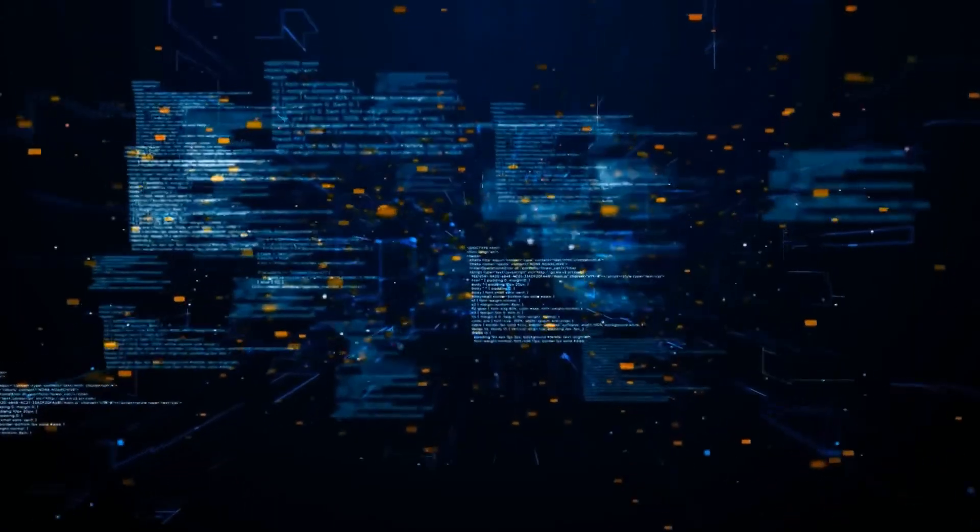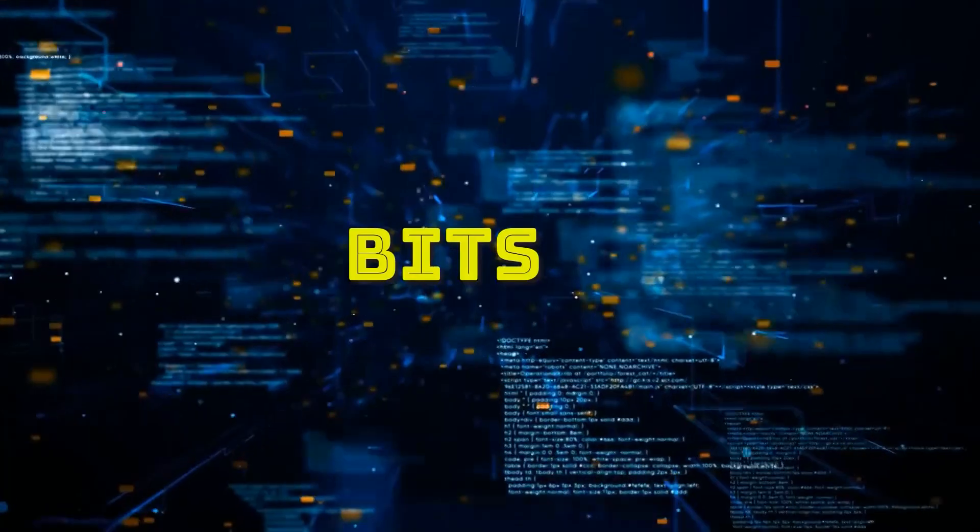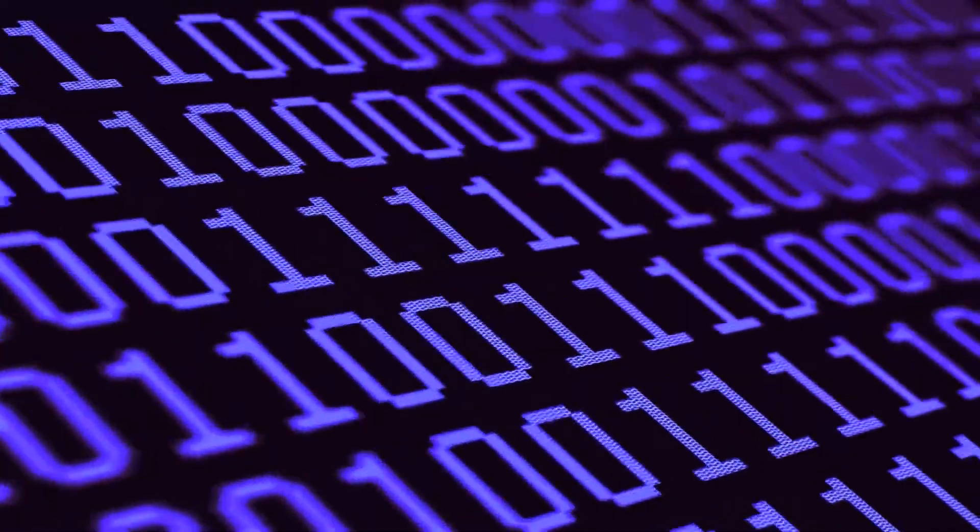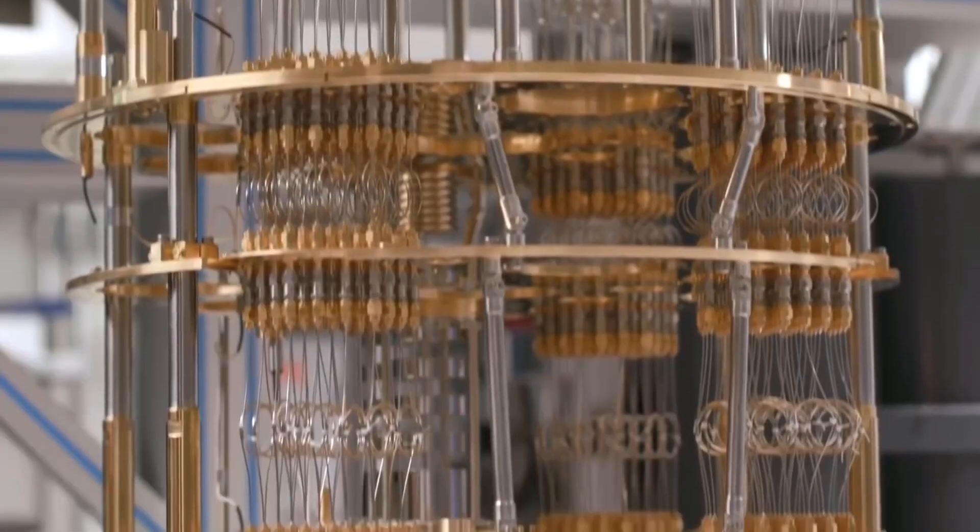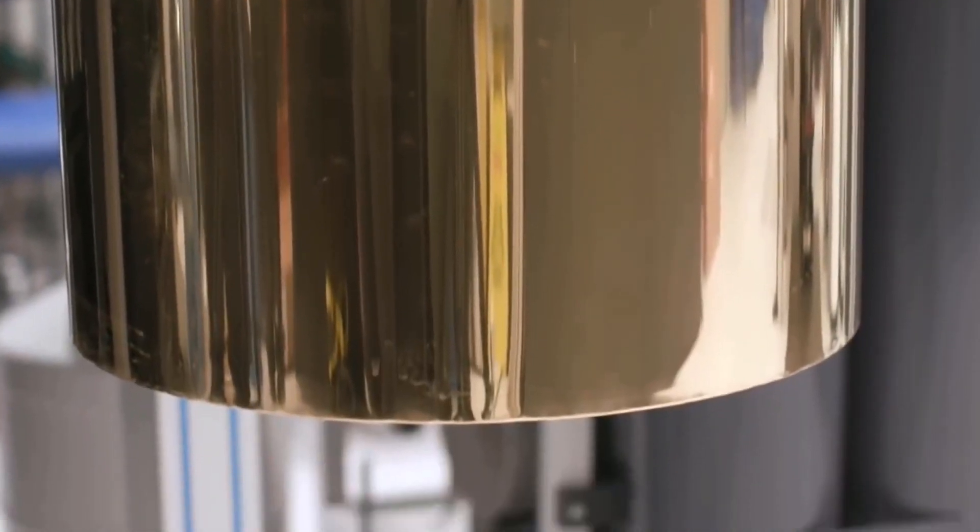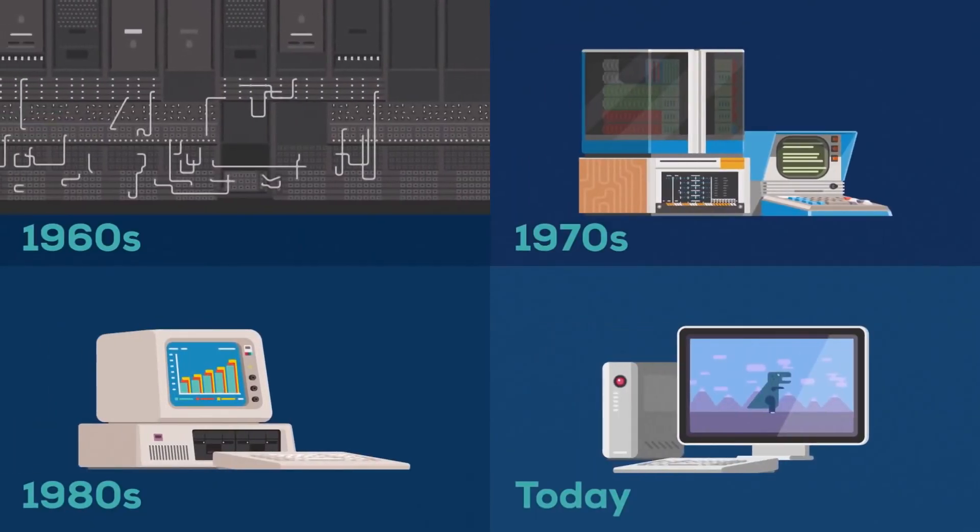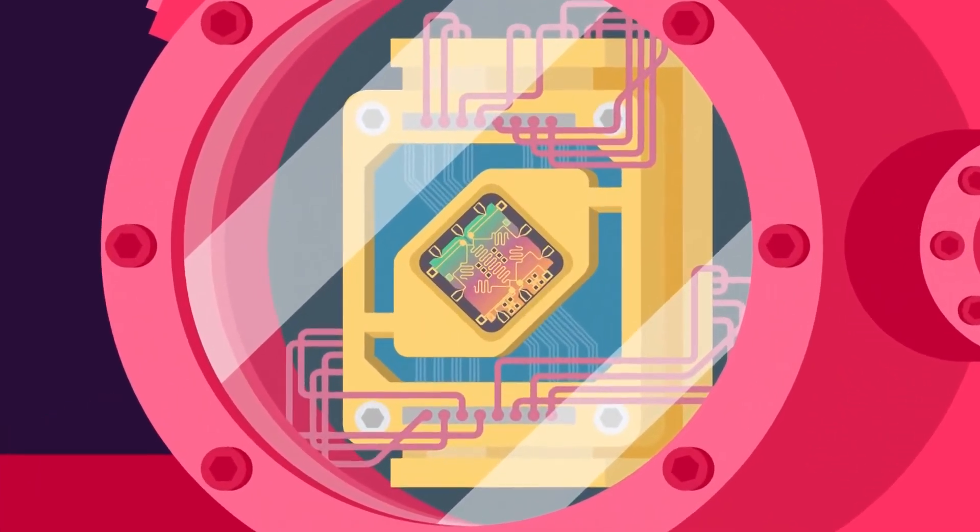Finally, entanglement. Qubits can also be connected when one changes, the others change too. This is called entanglement. It's like having puzzle pieces that always move together, no matter how far apart they are. Using these ideas, quantum computers can solve really hard problems much faster than regular computers. They're like puzzle solving superheroes.